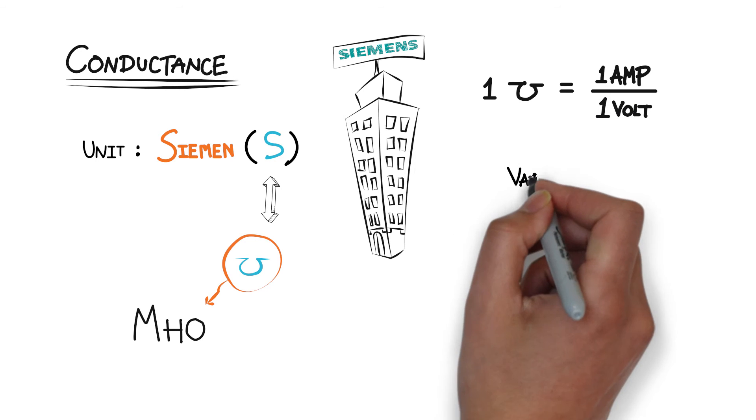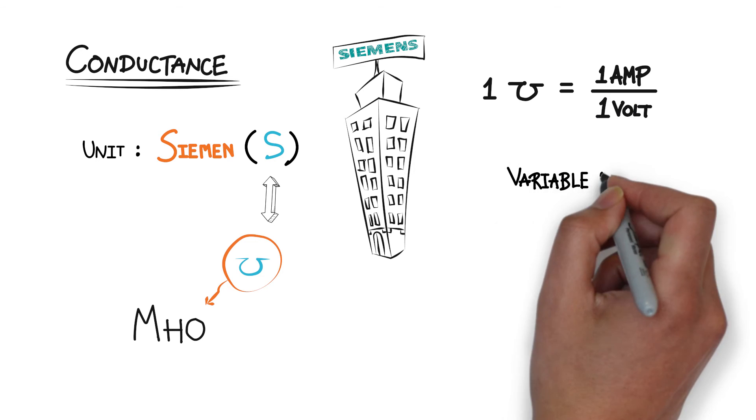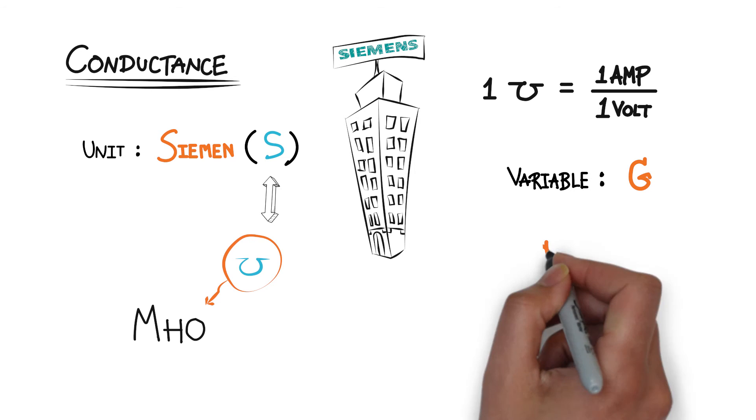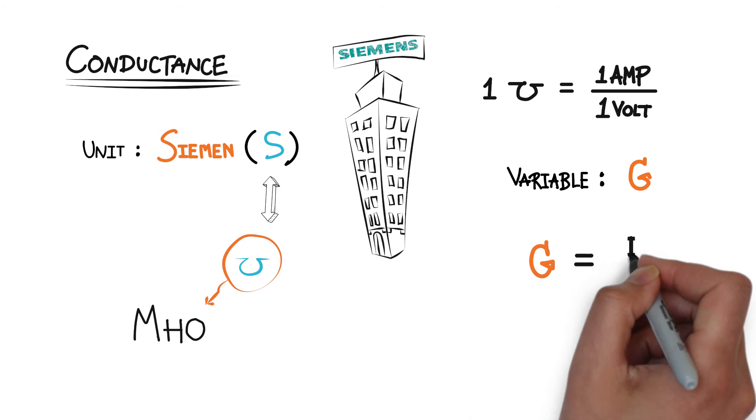One siemen is equal to one amp per volt. When we're doing calculations, we'll represent these values with a capital G. And so G then is going to be equal to the ratio of the current to the voltage. And again, remember that reference directions here do matter.